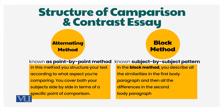Let's talk about the structure of a compare and contrast essay. There are basically two methods: the alternating method and the block method. In the alternating method, we give the comparison side by side in terms of contrasting points of view. In the block method, we give similarities in one body paragraph and dissimilarities in the next body paragraph.